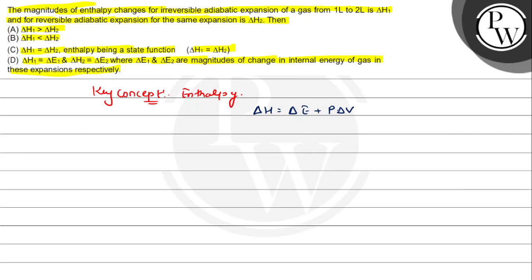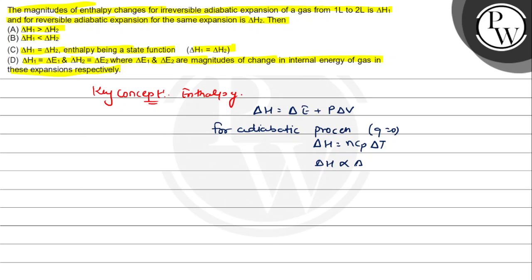You should know that for an adiabatic process, q is equal to 0. Then delta H is equal to n*Cp*delta T. So delta H is directly proportional to delta T. Cp here is the heat capacity at constant pressure.